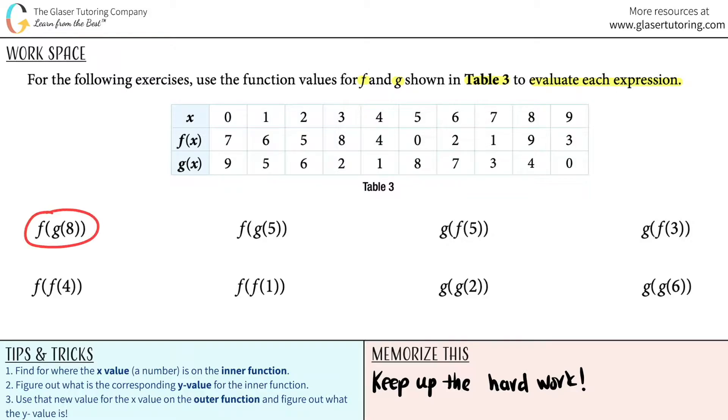So for the first one, it says f of g of x. Which function is the inner function? I got two functions here. I got f and I got g. The innermost function is always the one that's inside more parentheses. So in this case it would be the g function. It's inside these parentheses, so that's where you're going to start. So I'm going to just take it up here: g of x equals. We have to solve for that first. The number that is in the parentheses, in this case it's an 8, is the corresponding x value.